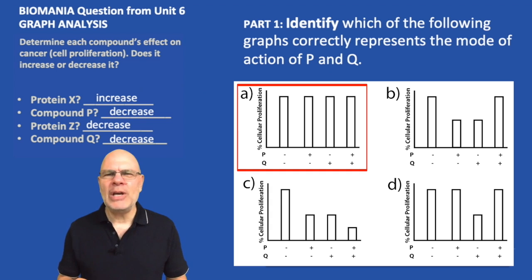The second bar says when P is present and Q is absent, the amount of cellular proliferation is the same as in the control. That doesn't make sense because we know compound P should be decreasing cell proliferation and cancer. So that looks fishy. The third bar is saying that when Q is present and P is absent, there's also no effect compared to the control. That also doesn't make sense. And when they're both present, no effect compared to the control. We're going to knock this one out.